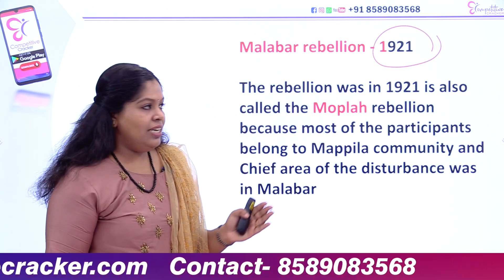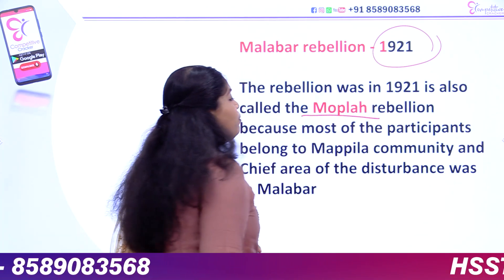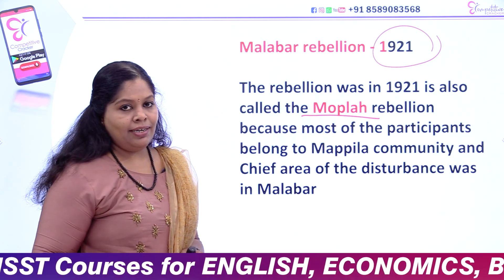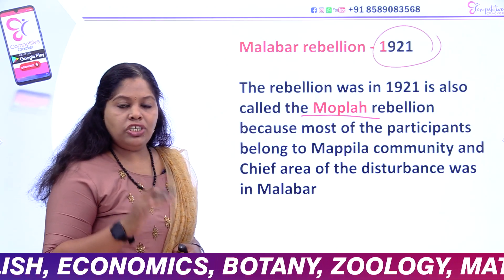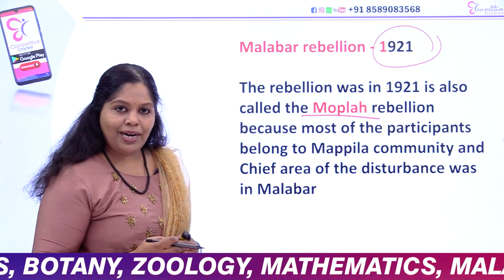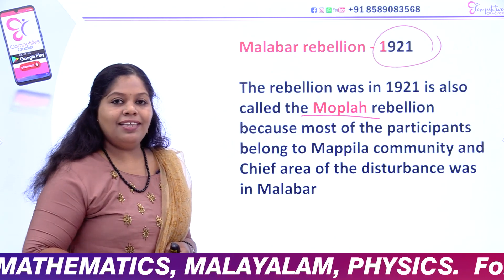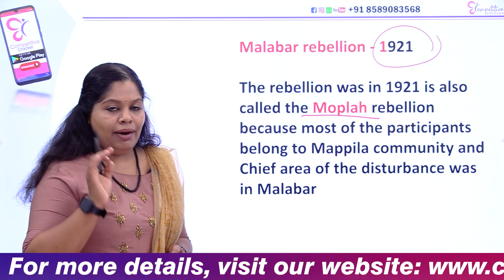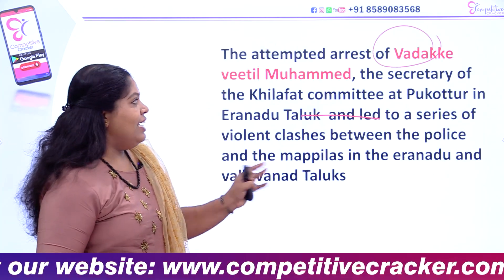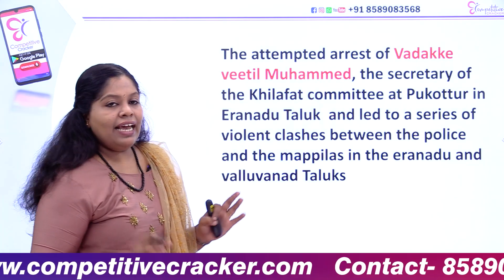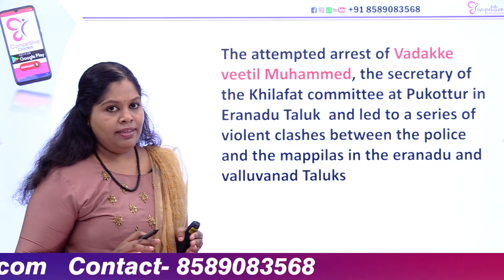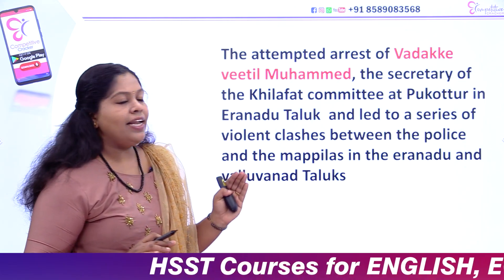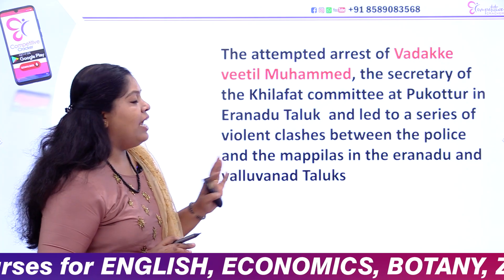The rebellion was in 1921, which is also called the Moplah Rebellion, because most of the participants belonged to the Mopla community and the chief area of the disturbance was in Malabar. The attempt at the arrest of Vatakki Vettel Muhammad, the secretary of the Khilafat committee at Pukotur in Eranaad Thaluk, led to a series of violent clashes between the police and the Maapilas in the Eranaad and the Valdanaad Thaluk.